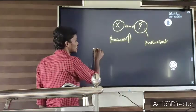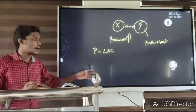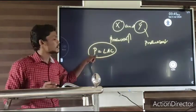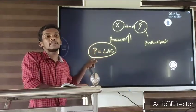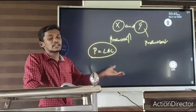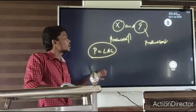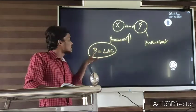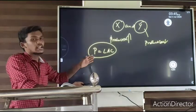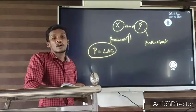In a perfectly competitive market, price equals the long-run average cost at the minimum point. As the market and firms expand, all firms under perfect competition are earning normal profits.